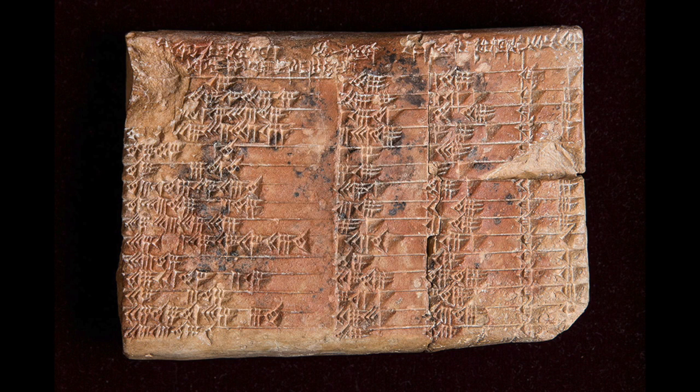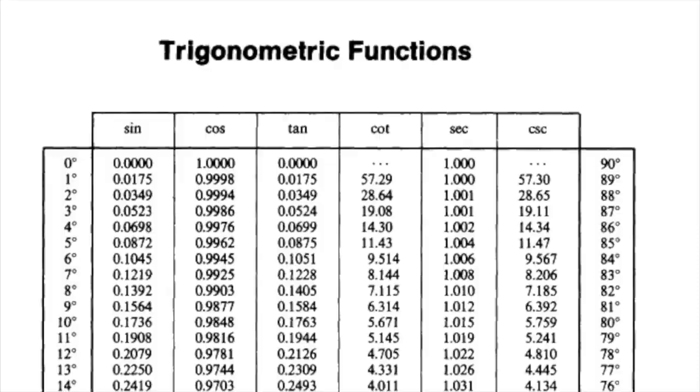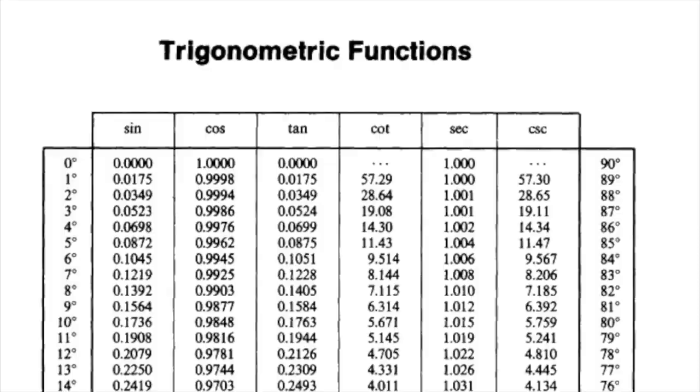That's what the Babylonians had on that one clay tablet. It's a reference table for what we would eventually call sine and cosine values. Modern tables showing these values still exist, and they are all pre-programmed into any basic scientific calculator.